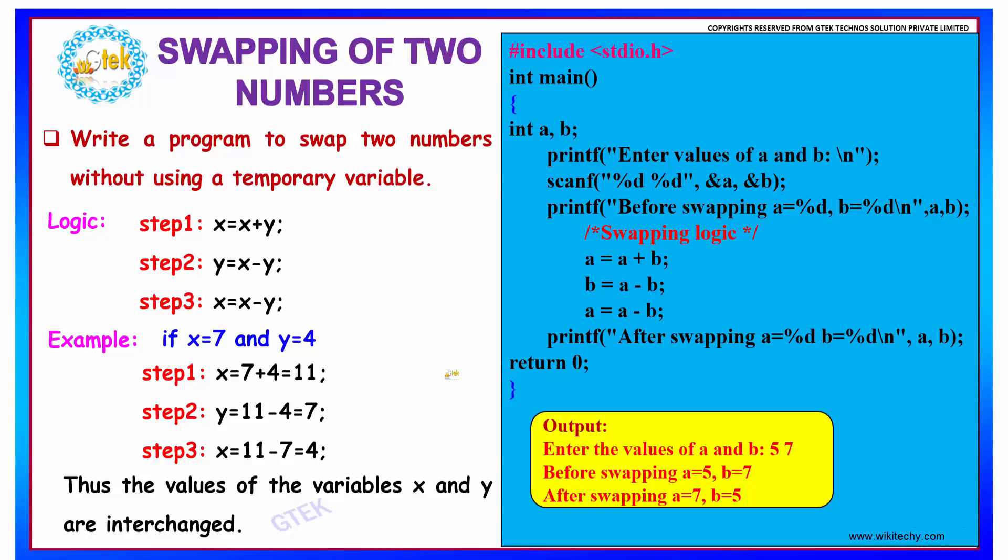Well, we have done swapping two numbers using a temporary variable. How can we do this without using a temporary variable? It is not a big deal. Let us see how to do that.